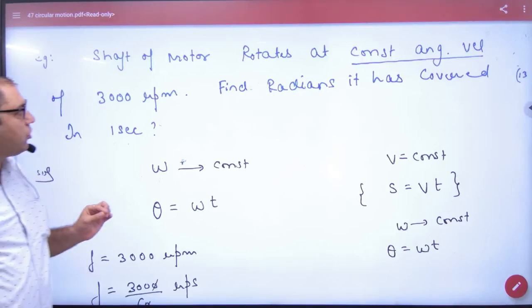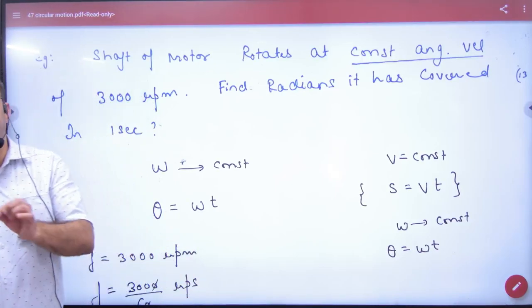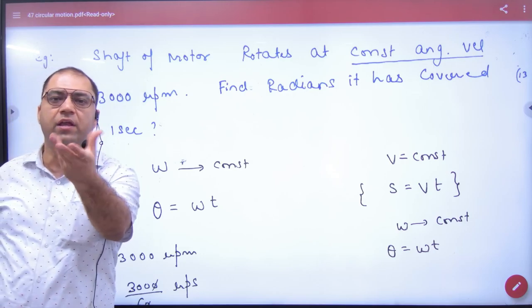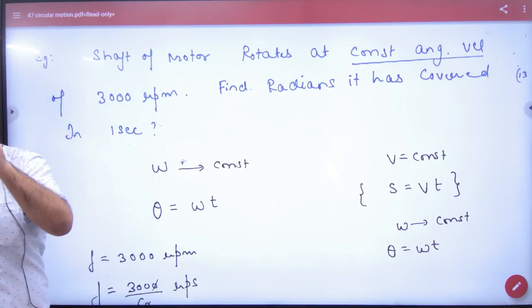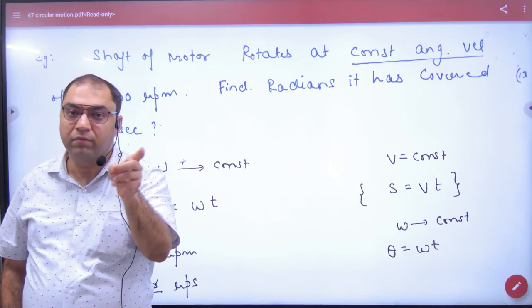The question is given: shaft of the motor rotates at a constant angular velocity, omega constant, at 3000 RPM. What is the frequency?